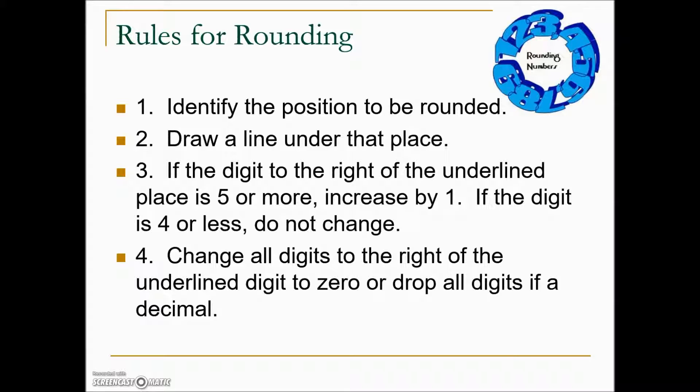Once we've made that decision, the fourth step is to change all digits to the right of the underlined digit to zero — if it's a whole number. If it's a decimal number, then you're going to drop all the digits.